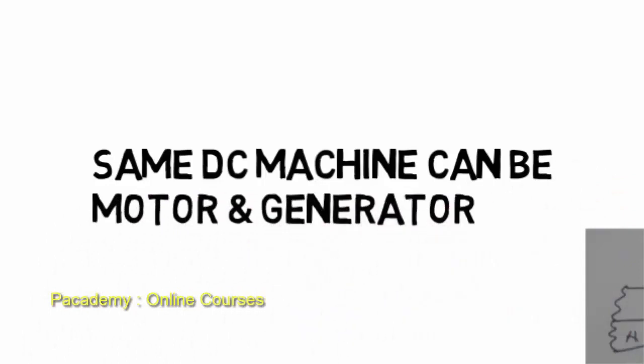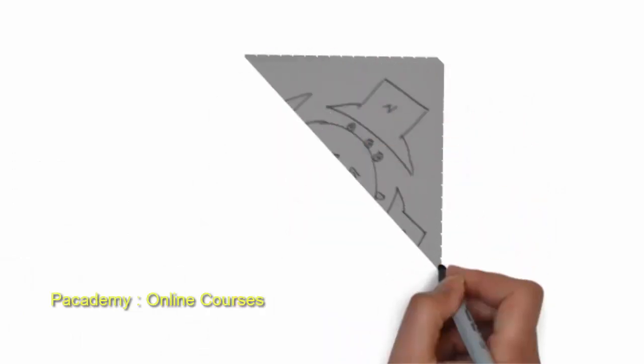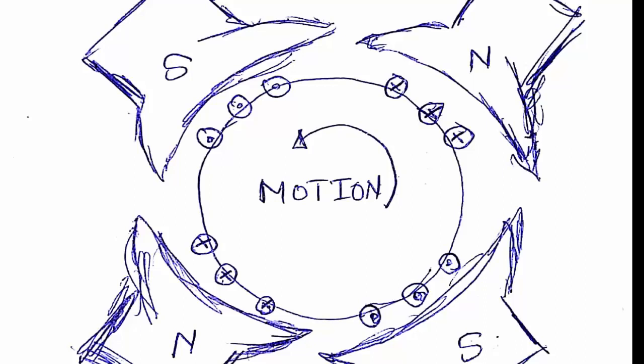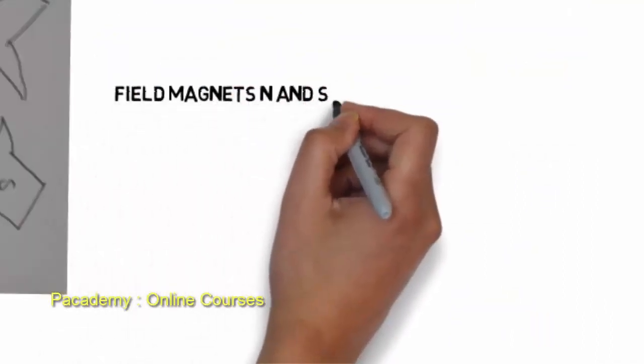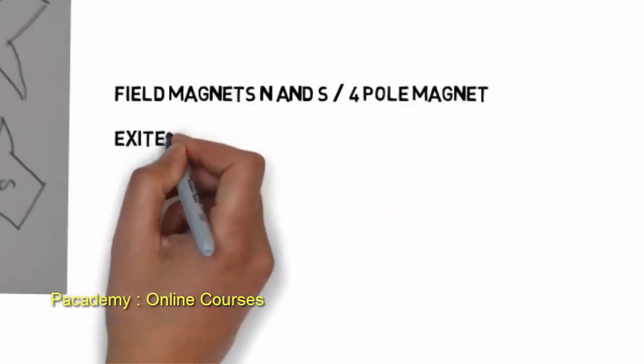The construction of DC machines is very similar for both generators and motors, and they can be interchangeably used. In a four-pole electrical motor, there is an alternating south-north pole arrangement. The armature is the circular part shown in the middle, and the armature conductors are supplied with current through a commutator. Each conductor, according to Fleming's left-hand rule, experiences a force, and all forces act together in the anti-clockwise direction, producing a torque that causes rotation of the armature.